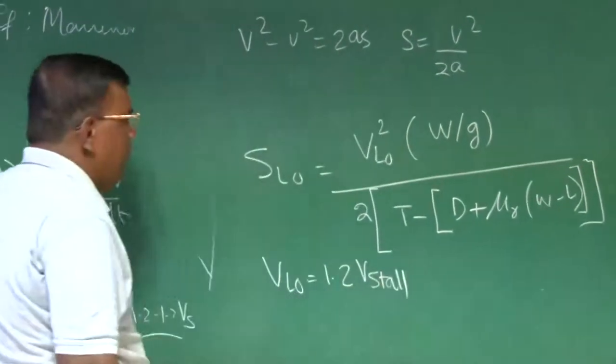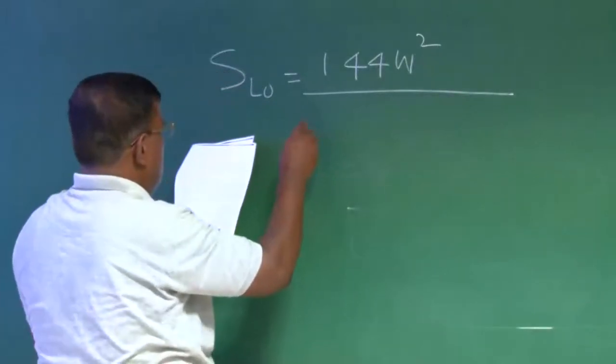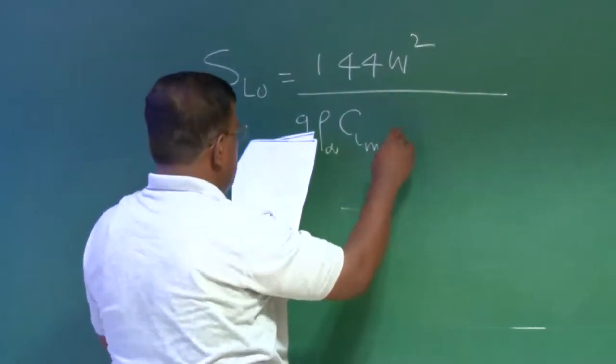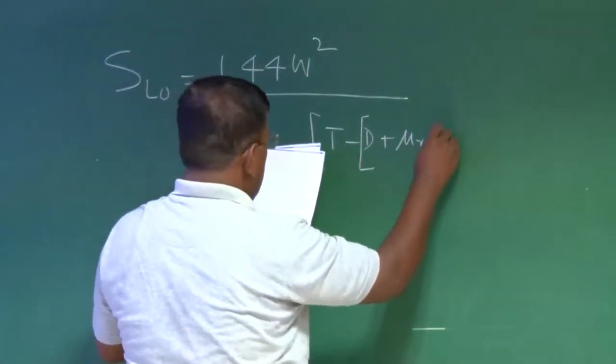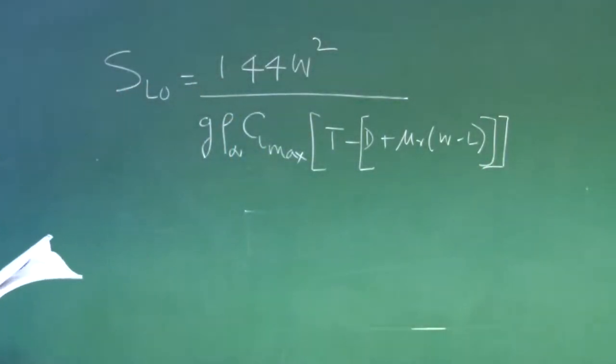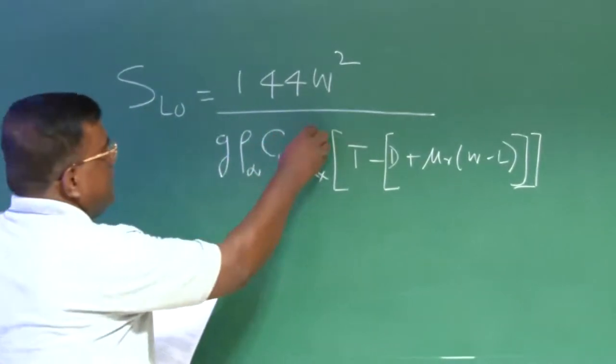If I follow this, then I will get S lift off as V lift off square into W by G divided by 2 times T minus d plus mu R W minus L average. And if I take V lift off equal to 1.2 times V stall, then I further get S lift off expression as S lift off equal to 1.44 W square by G rho infinity CL max S into T minus d plus mu R into W minus L.